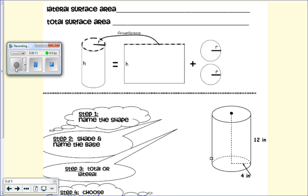You see where it says surface area and we've already worked with the prism formulas and now we have cylinders. So what is lateral surface area again?